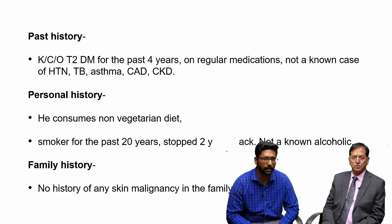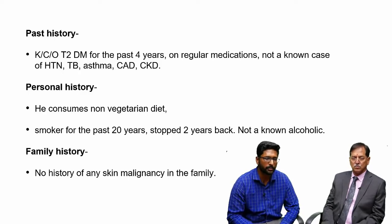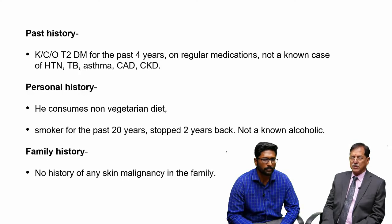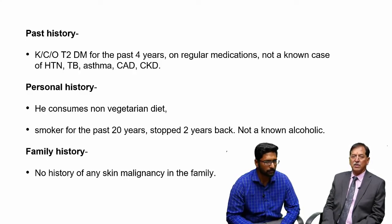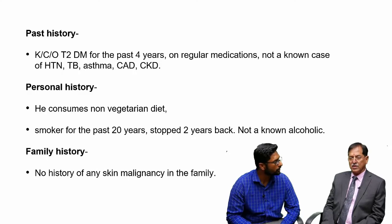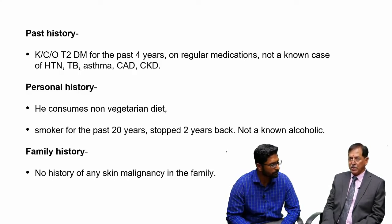The patient is a known case of type 2 diabetes mellitus for the past 4 years on regular medications, not a known case of hypertension, TB, or bronchial asthma. He consumes a non-vegetarian diet and was a smoker for 20 years, stopped 2 years ago, and is not a known alcoholic. Smoking is important because it impairs ulcer healing and can cause arterial disease including atherosclerosis; alcohol can impair liver function and wound healing.